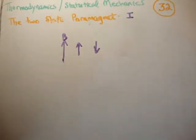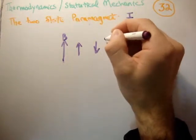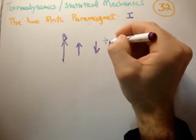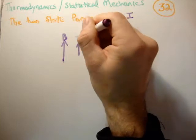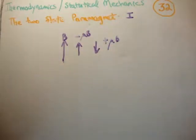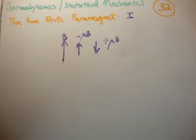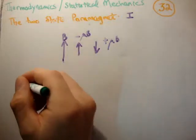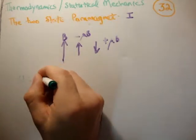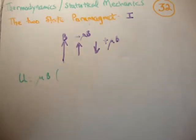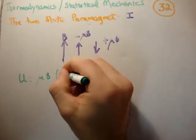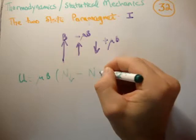The magnetic dipole moments pointing down actually have the higher energy, which we write as +μB, where B is the field and μ is the proportionality constant. The dipoles pointing up have energy −μB. So the energy of the system U equals μB times the quantity (N_down minus N_up). The energies cancel when equal numbers point up and down, so it's the difference that matters.